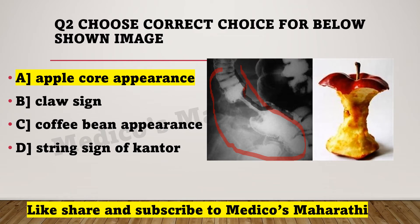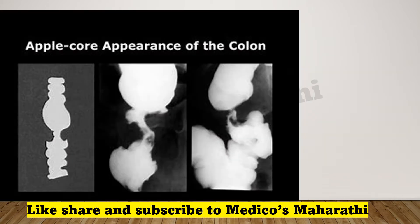This appearance is apple core appearance. Here you can see clearly how it is appearing. This is apple core appearance — you can see it clearly here as well. We will also see the other three signs for comparison.